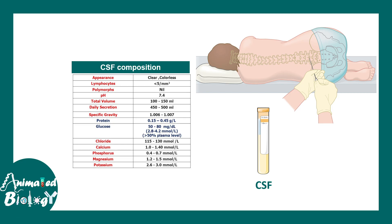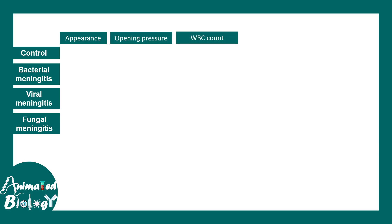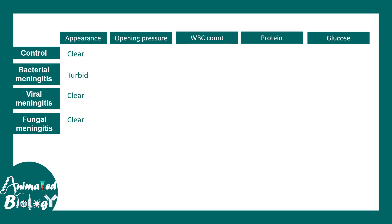The question is what really happens when there is an infection. We look at the appearance of the CSF, opening pressure, WBC count, protein content, and glucose level. In a normal control, CSF would be a clear fluid, but in bacterial meningitis there is turbid fluid. The protein level for all kinds of meningitis would be increased, because the blood-CSF barrier and blood-brain barrier are compromised, allowing protein to leak in.